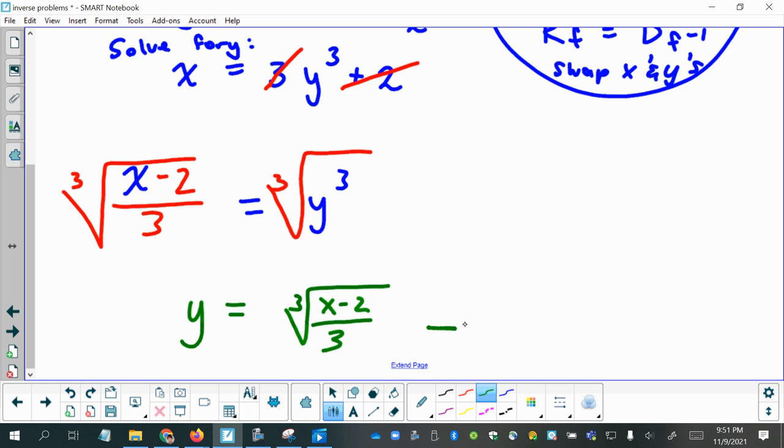This could also be written as the quantity x minus 2 quantity over 3 to the power of 1 third.